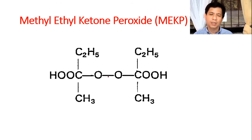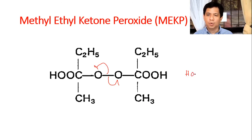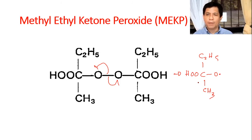A chemical bond is composed of two electrons. What happens is one electron goes to one oxygen and the other electron goes to the other oxygen. In the process, you form free radicals — specifically, HO–O–C(C₂H₅)(CH₃) with an unpaired electron on the oxygen. This catalyzes the reaction in fiberglass making.